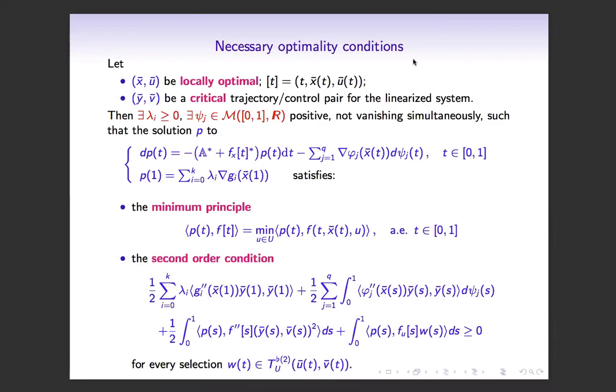Then there exists multipliers lambda_i corresponding to the cost and to the endpoint constraints, and measures c_j corresponding to the running constraints that are regular, positive, do not vanish simultaneously, and such that the solution p to the adjoint equation satisfies the minimum principle, and the second order variational inequality for every selection w of the second order tangent set to the control set capital U.